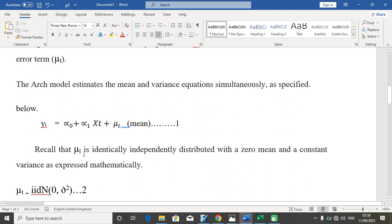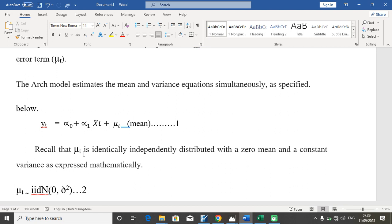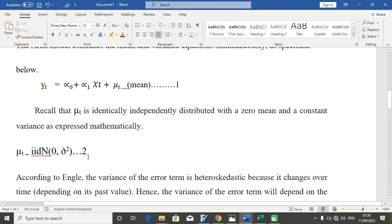But in our previous class, we were told that the error term is identically independently distributed with zero mean and a constant variance, as expressed in the mathematical notation below. The error term is identically independently distributed with zero mean and a constant variance.